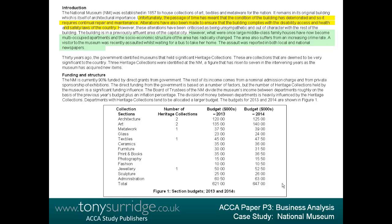Thirty years ago, the government identified the museums that held significant heritage collections. Three heritage collections were identified at the National Museum — a figure that has risen to seven in the intervening years as the museum has acquired new items. There is no suggestion in this paragraph that the museum has problems, so it would not form part of PESTEL analysis. Funding and structure: the National Museum is currently 90% funded by direct grants from government. The museum is heavily funded by government, which has political ramifications — I color this blue.